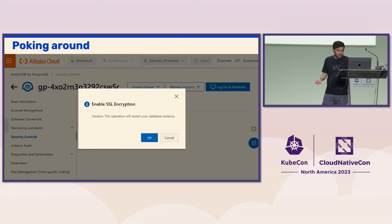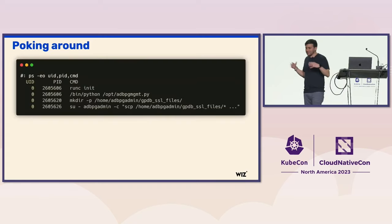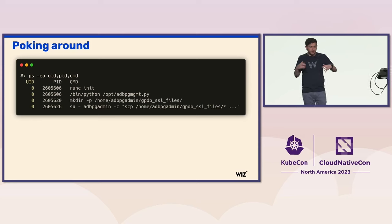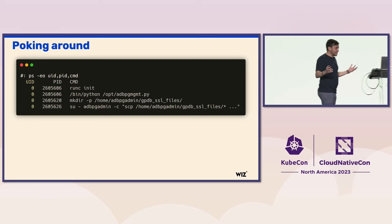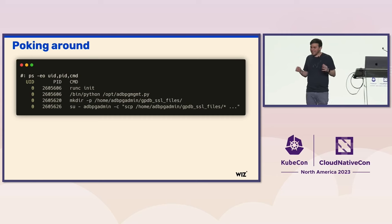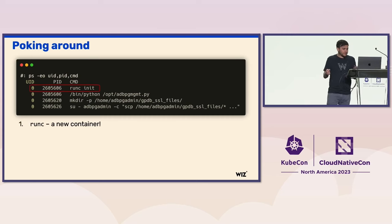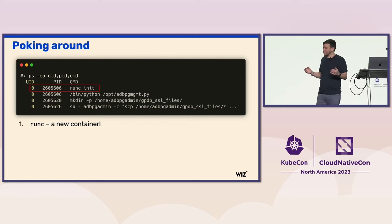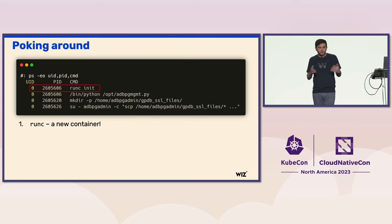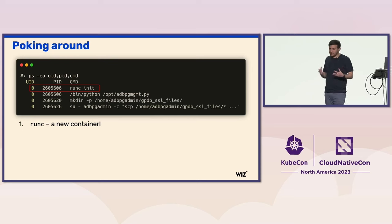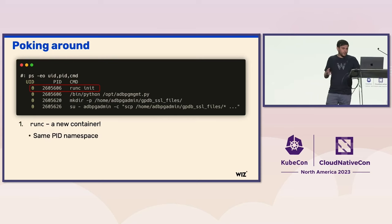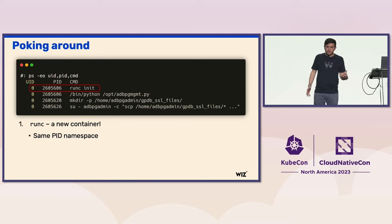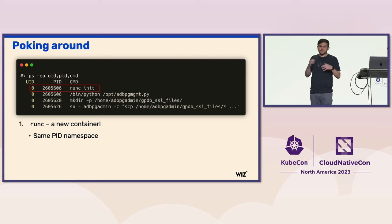We clicked on that toggle, clicked OK, and suddenly all sorts of interesting stuff started happening within our container — all these new processes started popping up. The first process we saw was runc init, which is very exciting because it means a new container is being created. But why exactly do we see that process? It must mean we share the same PID namespace — our container and that new container being spawned share PID namespace.